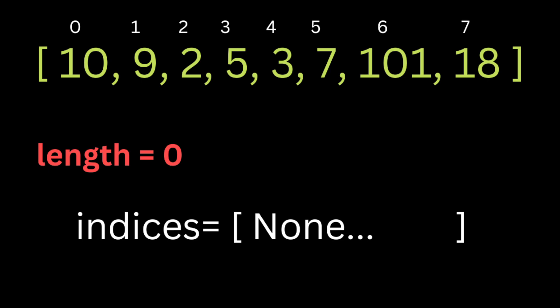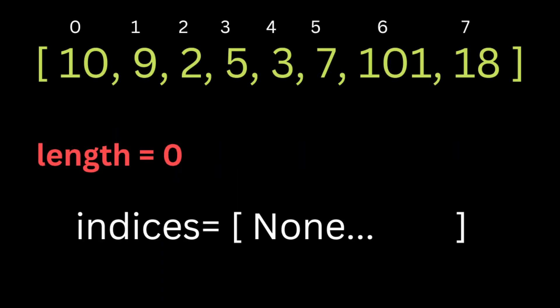For this algorithm we're going to create an array that will store only the index of the smallest number in the input array that comes at the end of the longest increasing subsequence of length i. For example, given this input list, we'll have an indices array and a variable 'length' starting at zero, which will hold the length of the longest increasing subsequence. At the beginning we fill the indices array with None values.